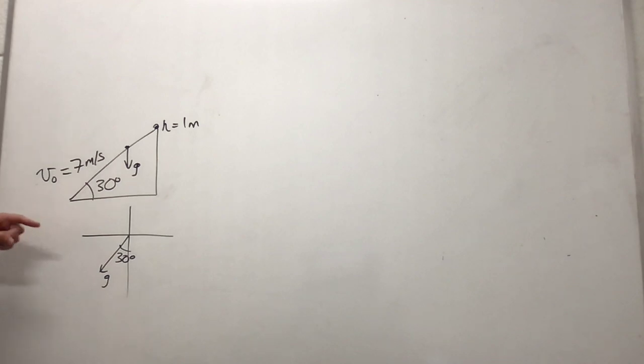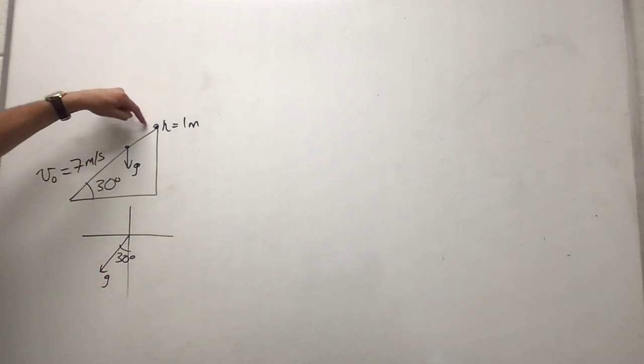You're going to have a velocity parallel to the plane and then you have gravity pulling in the other direction. So the final velocity over here should be smaller than this initial velocity.